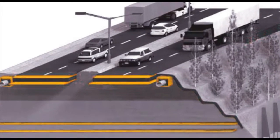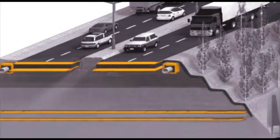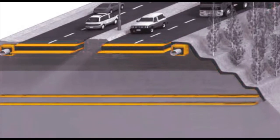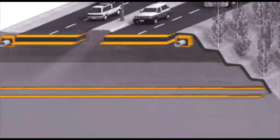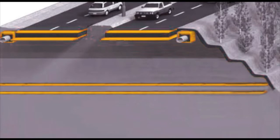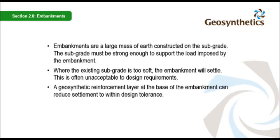Embankments are frequently used in highway projects to support consistent and safe road alignment. Embankments built on weak soils will require reinforcement at the base to control settlement. Embankments are a large mass of earth constructed on the subgrade. The subgrade must be strong enough to support the load imposed by the embankment. Where the existing subgrade is too soft, the embankment will settle, which is often unacceptable to design requirements.